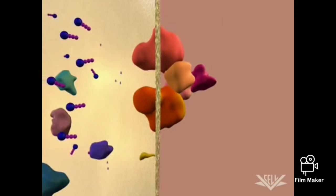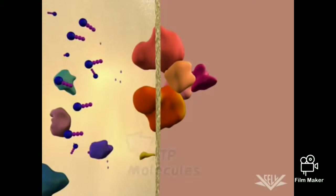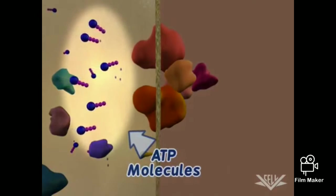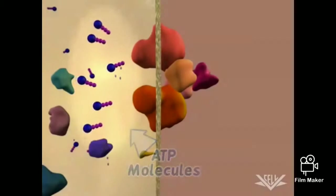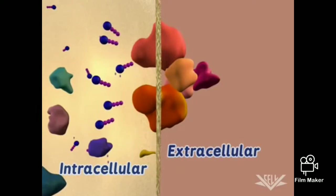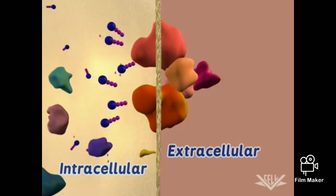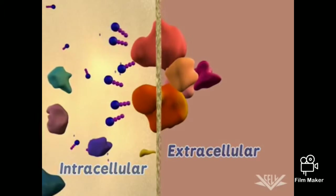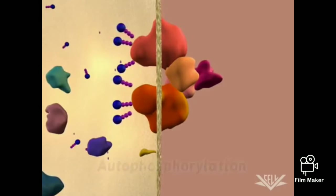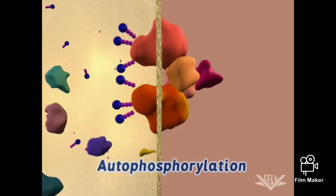Once the insulin binds to the receptor, phosphate groups are added to the intracellular domain of the receptor. Since the receptor itself adds the phosphate groups, the process is called autophosphorylation.